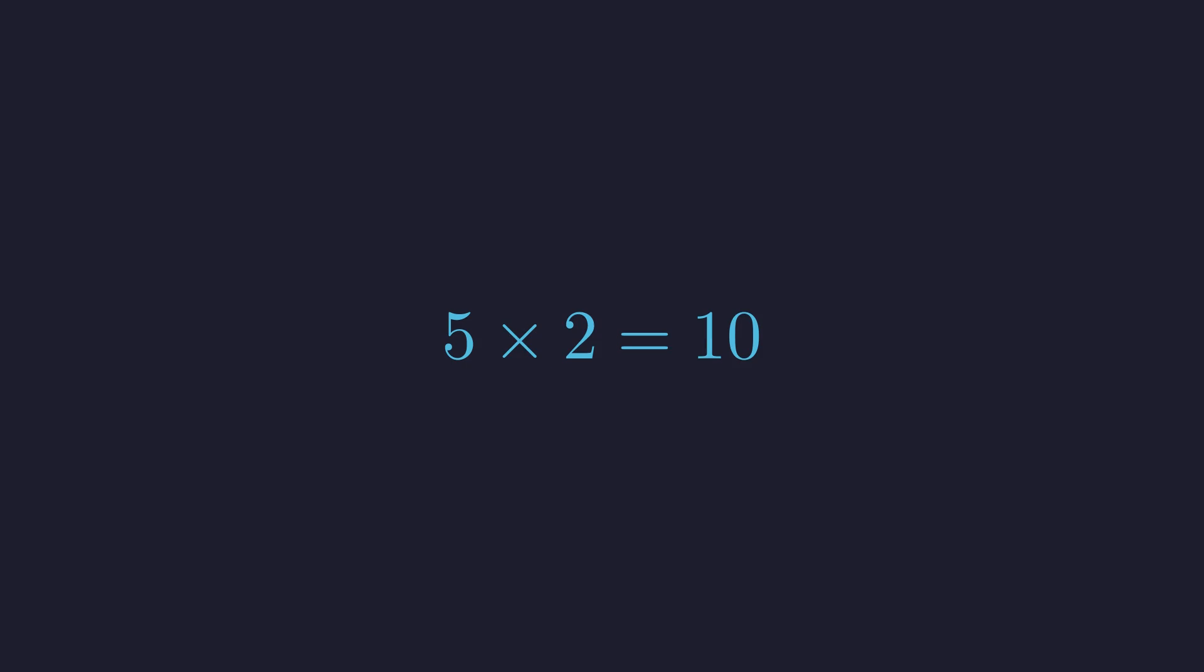Now let's apply this same logic to our problem. Let's assume one divided by zero equals some number, which we'll call x. If this equation is true, then the inverse multiplication must also be true. That's the rule we just established. This would mean that x times zero must equal one.